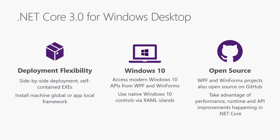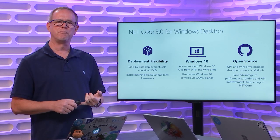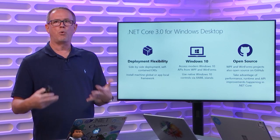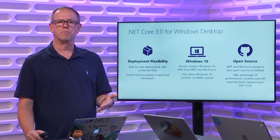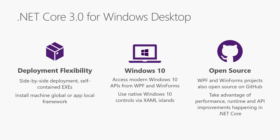Moving to desktop: millions of developers still build desktop applications because they're simple to write — you drag controls to a form and write some code. In .NET Core 3, WinForms and WPF are now supported, and you get all the benefits of .NET Core: side-by-side deployments mean a framework update can't break your app, you can compile the app and framework into a single EXE, Windows 10 APIs are all available, and WinForms and WPF are now open source.